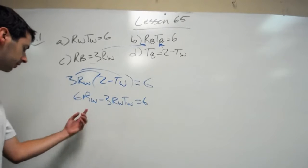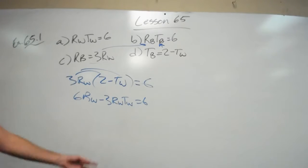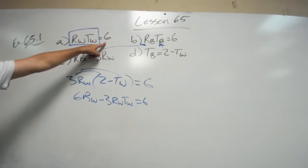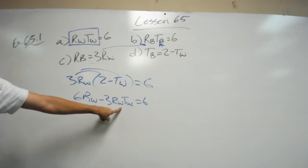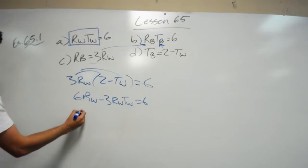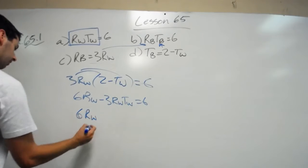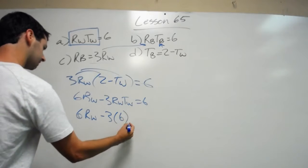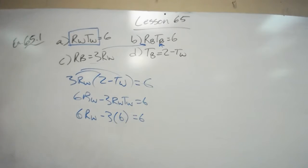Well, do we know what rw is? No. Do we know what rw times tw is? Those are two separate variables. However, we actually know the value of rw times tw - we know that it's 6. So since we know that value, we can plug that in right here and be left with one variable of rw. So I write 6rw minus 3 times 6 equals 6.